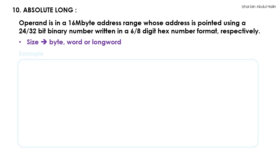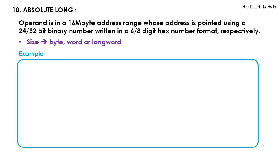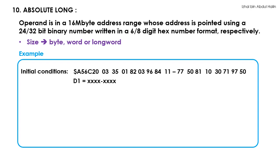Now for the examples. The initial condition shows a 16-byte memory block starting at address A56C20. Initially, the contents of D1 is unknown. Consider the instruction MOVE.L A56C2A, D1 — the A56C2A preceded with the dollar sign tells the microprocessor that the absolute long addressing mode is in use. A56C2A is the address of the operand and is a 6-digit hex number.